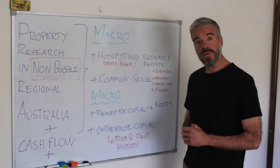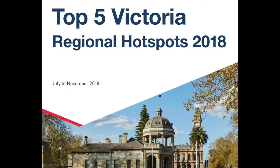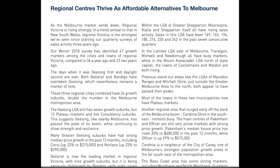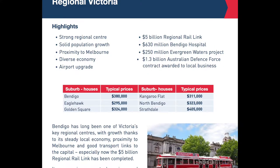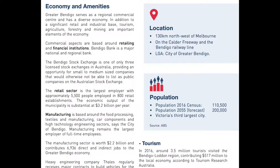Here are some of the things I like about the HotSpotting reports. For example, we have a regional report for Victoria with the top five regions. The reports include commentary on what's happening in that particular regional center — the drivers and key things influencing the market. They also include a very handy highlight summary on the main things affecting that regional center, including strengths and weaknesses.